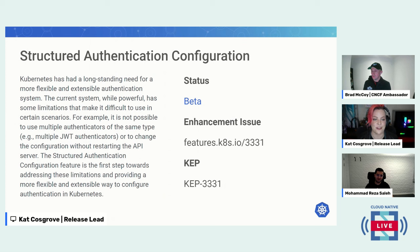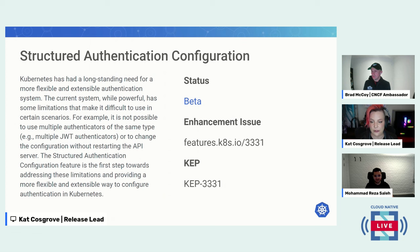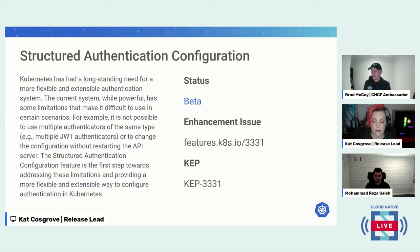The next beta is structured authentication configuration. Kubernetes has had a longstanding need for a more flexible and extensible authentication system. The current system, while powerful, has limitations — for example, it's not possible to use multiple authenticators of the same type or to change the configuration without restarting the API server. The structured authentication configuration feature is the first step toward addressing these limitations and providing a more flexible way to configure authentication in Kubernetes.